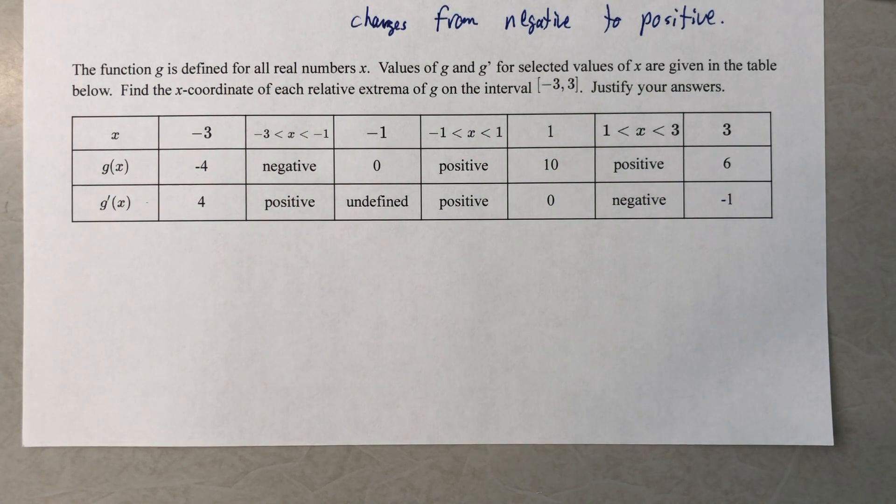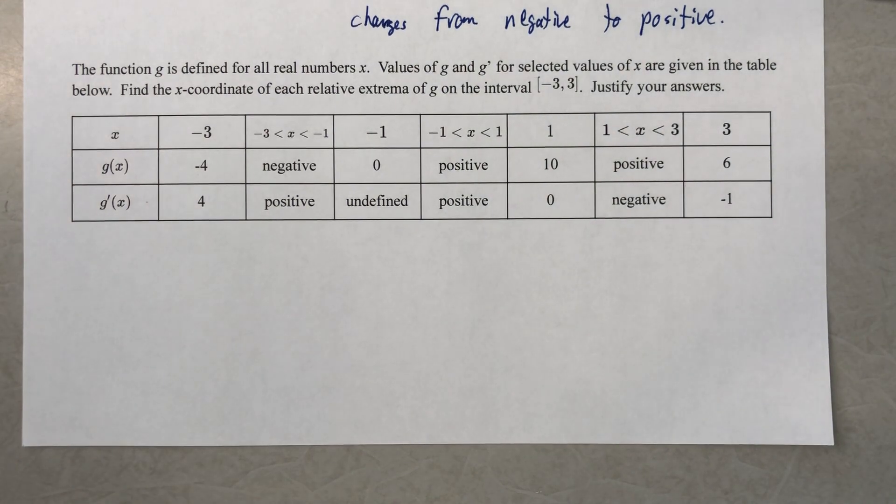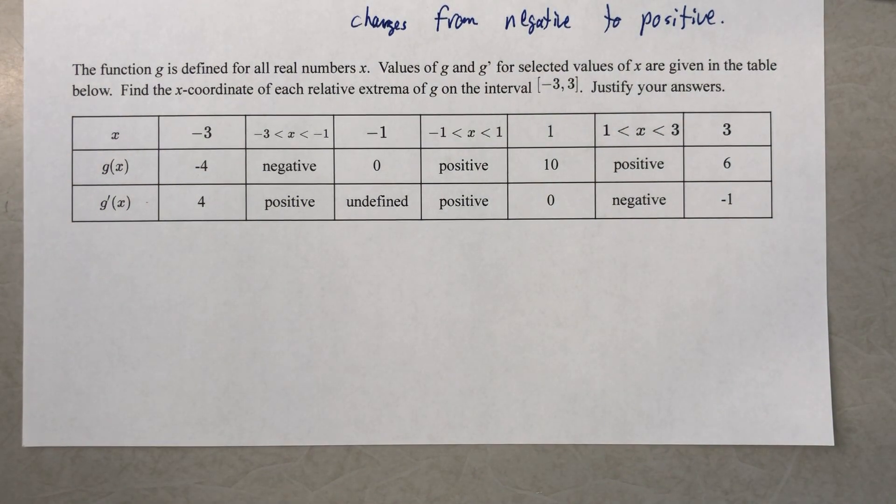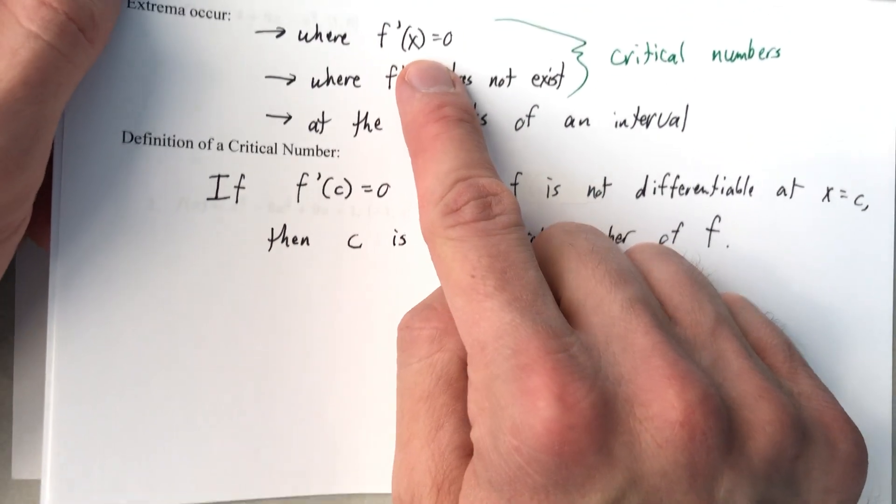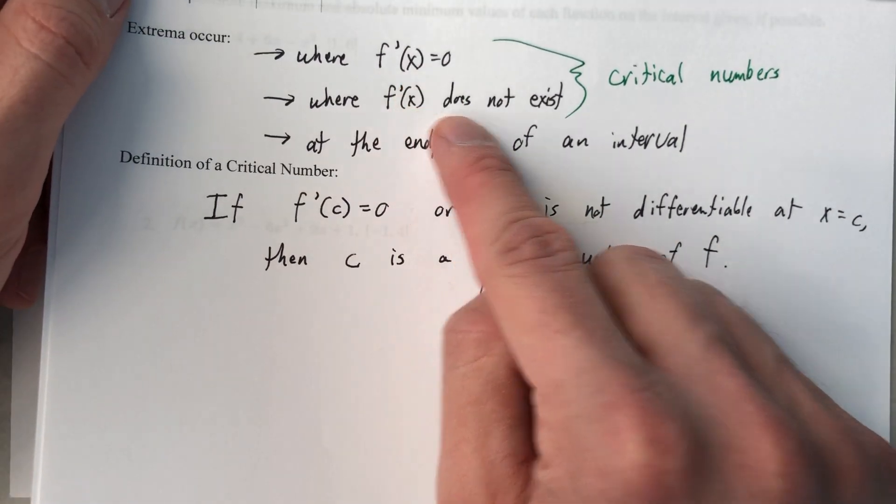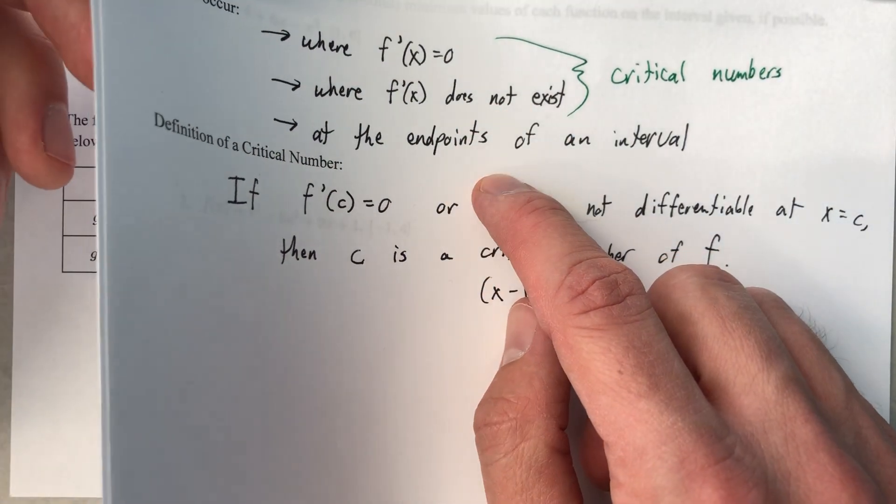Where do maximums and minimums occur? Maximums and minimums occur where the derivative equals zero, where the derivative does not exist, or at the endpoints of an interval.